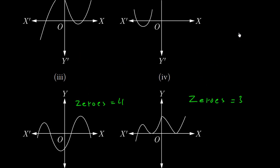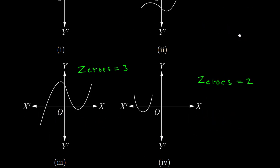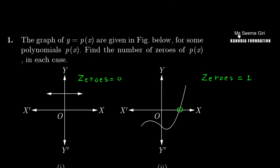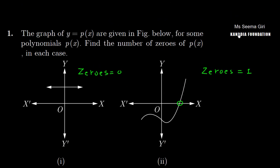Why don't we look at the y-axis? Because the question asks us: y equals p(x). So when we use the polynomial, we are using the x variable. Therefore, we only check the x-axis.